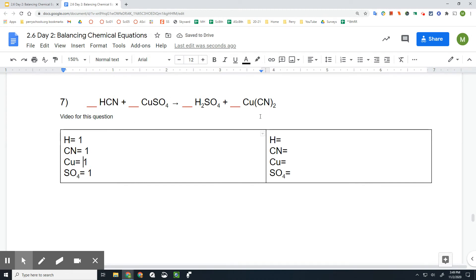On the product side of the equation, I've got two hydrogen, I've got two CN since it has it in parentheses, there's two of them. There's one copper, and there's one SO₄.